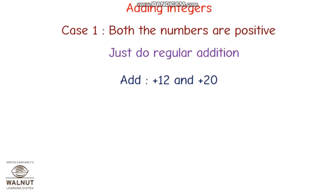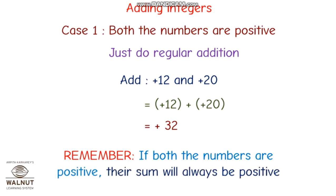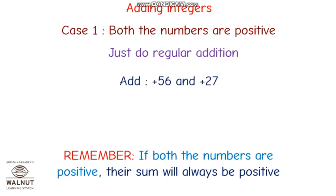First case: both numbers are positive. When both numbers are positive, we just do regular addition. For example, 12 plus 20 — we add them and get 32. We have to remember that when both numbers are positive, the sum will always be a positive number.